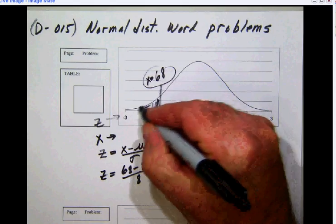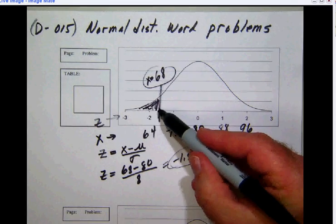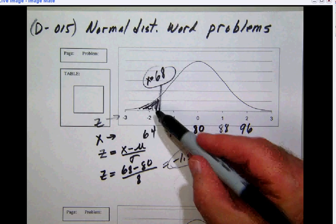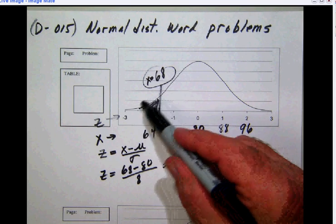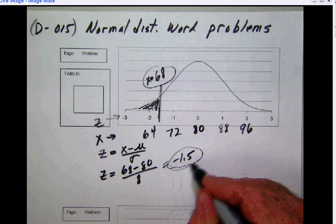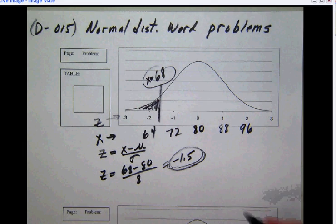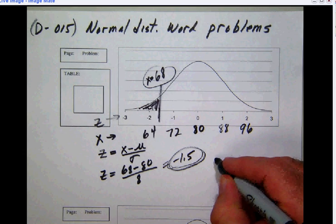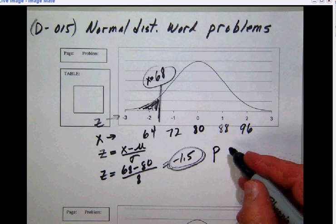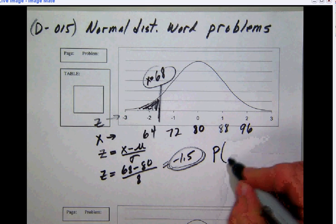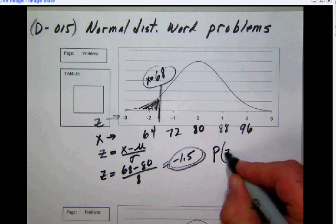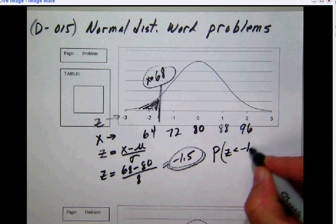So the proportion that we want is the area under the curve. Notice that that is to the left of a z-score of a negative 1.5. And so right away, the button that tells us the area under the curve to the left of the z-score is the P of z button.